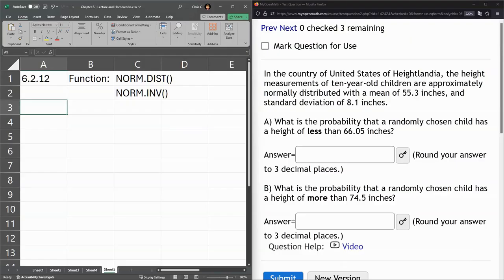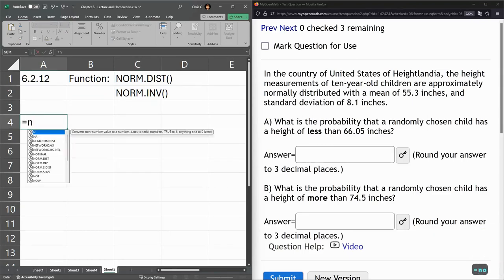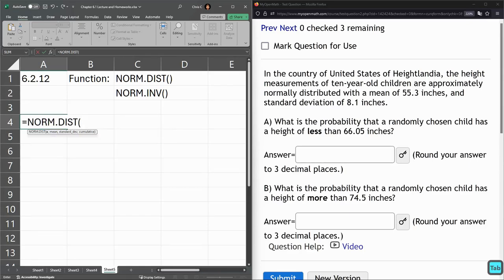This question is about a normal distribution, and we have to use the norm.dist function in Excel for this. Let's go ahead and type that in. If you type norm, you'll get all the norm functions. The first one is the one we want, so I'm hitting tab. And right here, it may be a little hard to read, but the parameters are listed below. The first one is x, which is always the value.